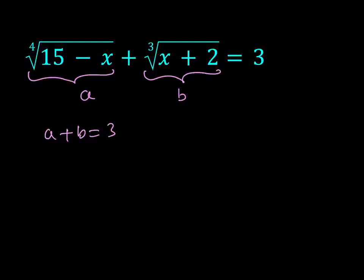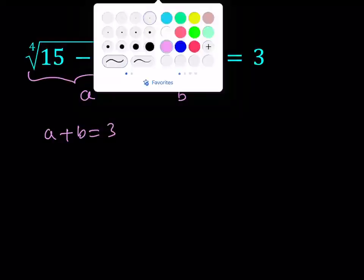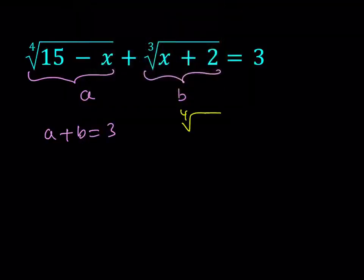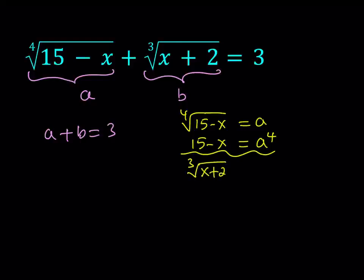Now how do we get another equation? Well let's go ahead and look at what we did. We said the cube root of x plus 2 is equal to b and the fourth root of 15 minus x is equal to a. So I can write this as the fourth root of 15 minus x equals a. Let's raise both sides to the fourth power. 15 minus x equals a to the fourth. And then let's go ahead and do the same thing for the cube root. Cube root of x plus 2 is equal to b. If you cube both sides you get x plus 2 is equal to b cubed.